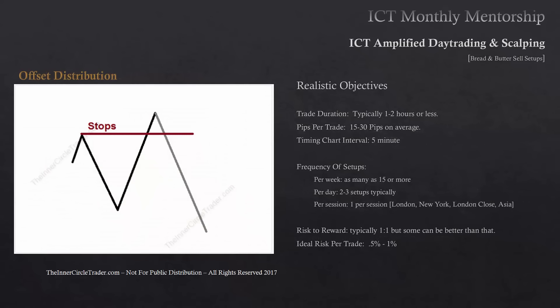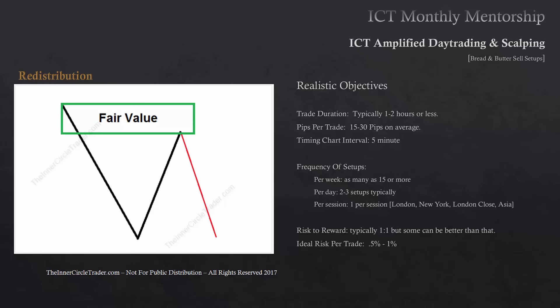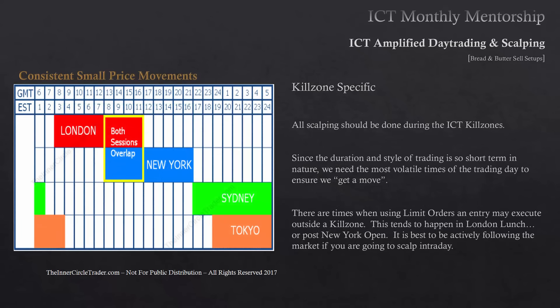For offset distribution and fair value — everything we saw for the bread and butter buy setups is just being reversed for sell setups here. All the parameters — pips per trade, hold time, all the statistics — apply the same, just reversed. And everything we're looking for in bread and butter sell setups is strongly related to kill zone setups. They must occur inside the kill zone. We're not looking to scalp outside of the highest volume session times of the day — London open, New York open.